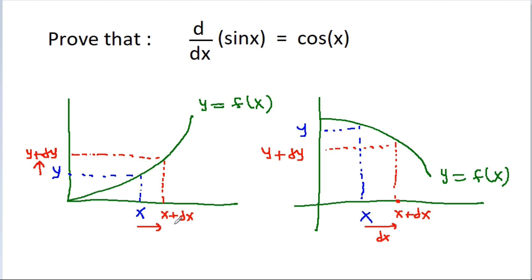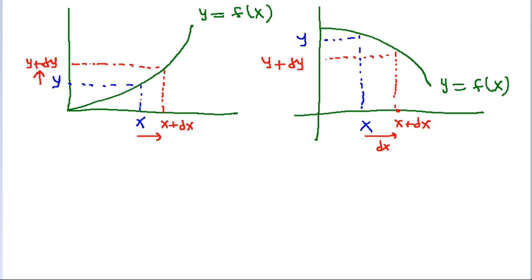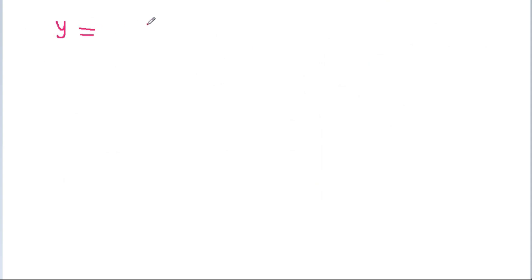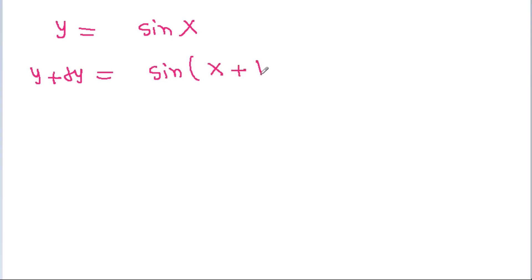So the point is, if we change x by dx, then y will also change by some dy. Now we have y is equal to sin x, and if we change x by dx, then y will change by some dy. So we get y plus dy is equal to sin(x plus dx).